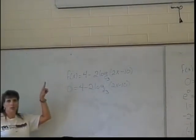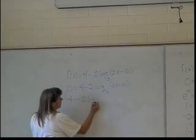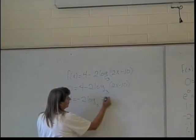What do I do first? Okay, so minus 4 equals negative 2 log base 3 of 2x minus 10.